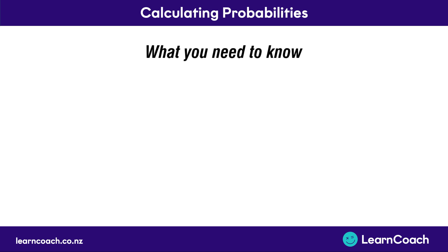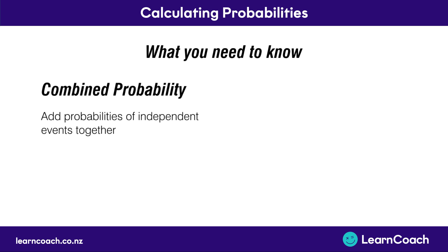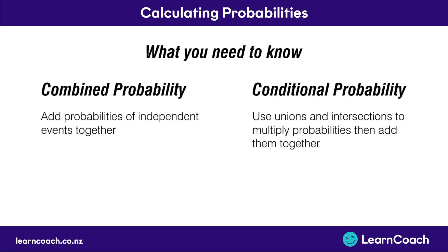So from this video, what you need to know is that combined probability is when you add probabilities of independent events together, and conditional probability is when you use unions and intersections to multiply probabilities and then add them together.